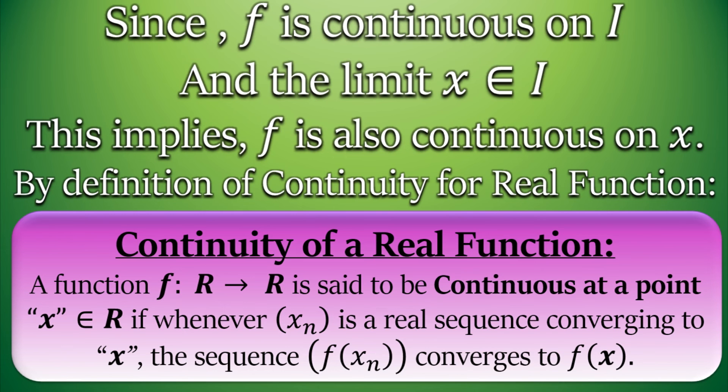Now look at the definition of the continuity of a real function. A function f from real numbers or a subset of real numbers to real numbers is said to be continuous at a point x that belongs to the domain of f if, whenever xₙ is a real sequence converging to x, the sequence f(xₙ) converges to f(x).